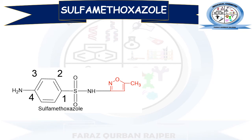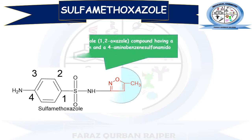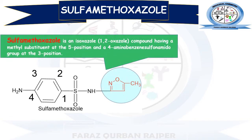Sulphamethoxazole is a derivative of sulphanilamide that is formed by the substitution of the N1 position with the isoxazole ring. Isoxazole is a heterocyclic ring in which nitrogen and oxygen are present, but this isoxazole ring has a further methyl substitution at the fifth position.